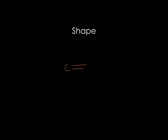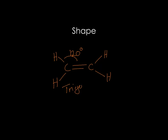In alkenes, if you look around one carbon atom, you find that you've got three bonding regions and no lone pairs. And so that means you end up with bond angles of 120 degrees, which is of course a trigonal planar shape. So actually this molecule is all in one plane.